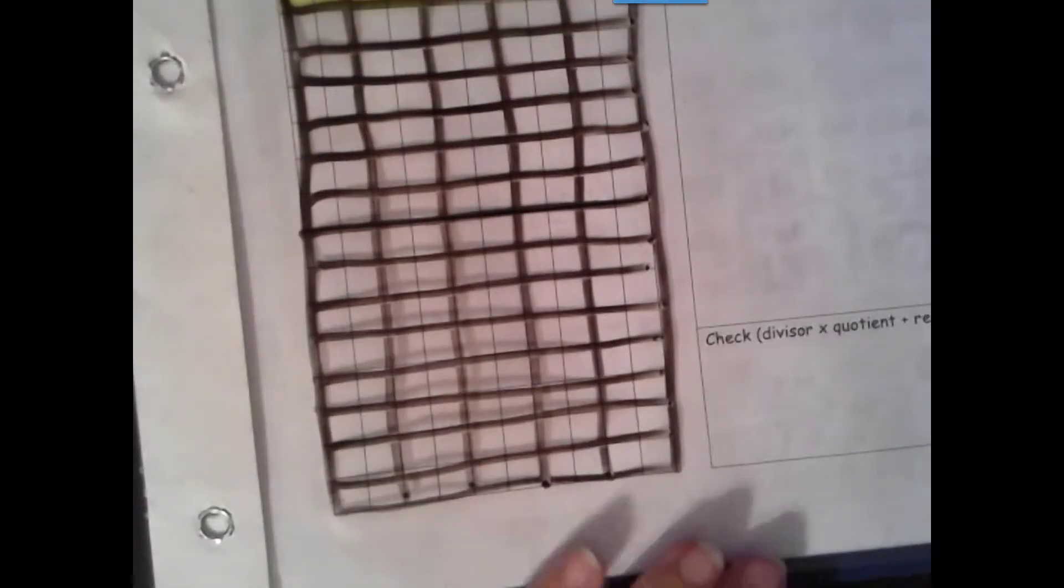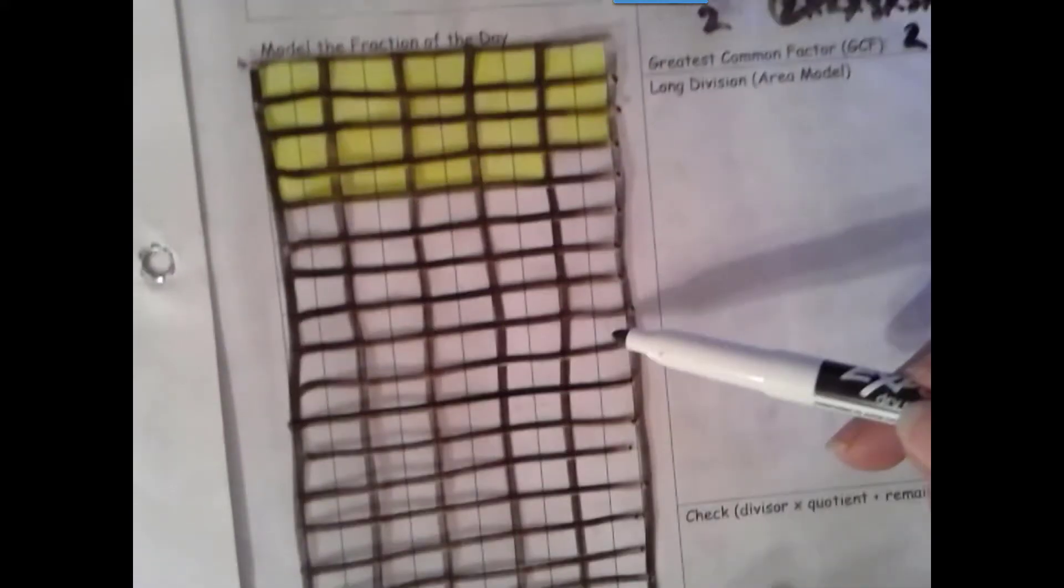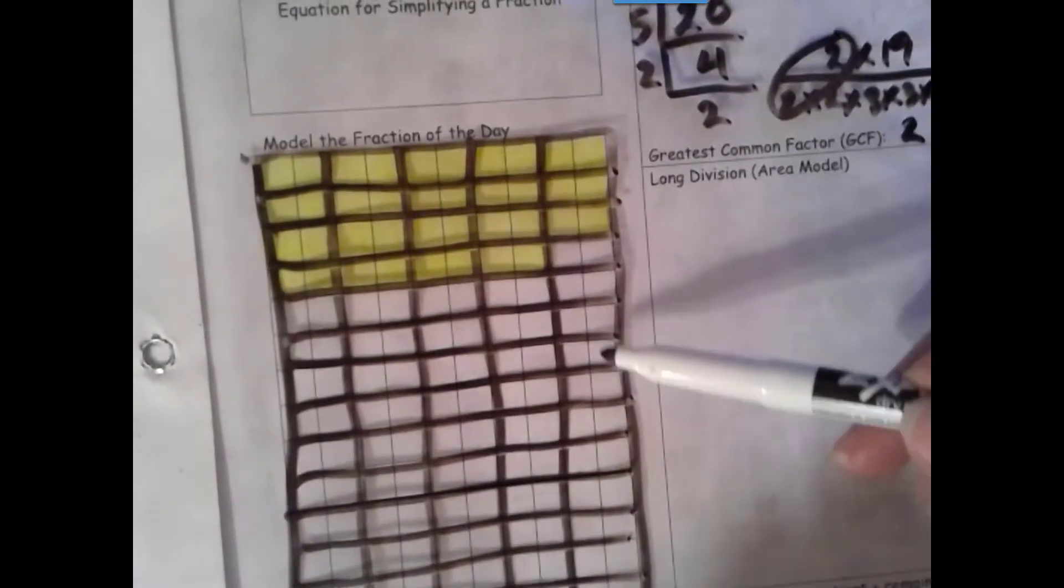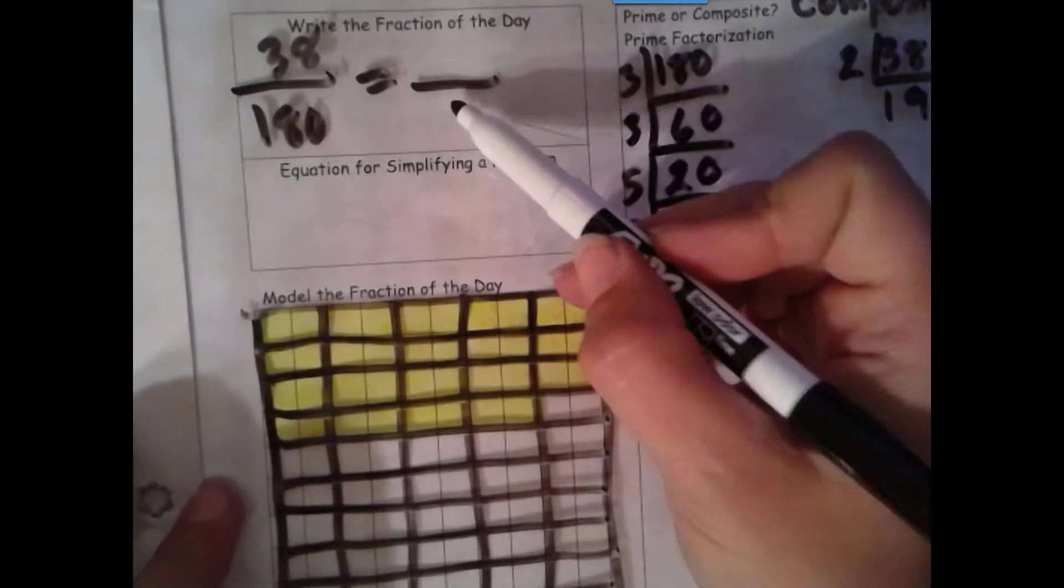Okay, now we want to count up our total amount of groups of two. Since each of my rows has five groups of two in each of them, I can count by fives: 5, 10, 15, 20, 25, 30, 35, 40, 45, 50, 55, 60, 65, 70, 75, 80, 85, 90.